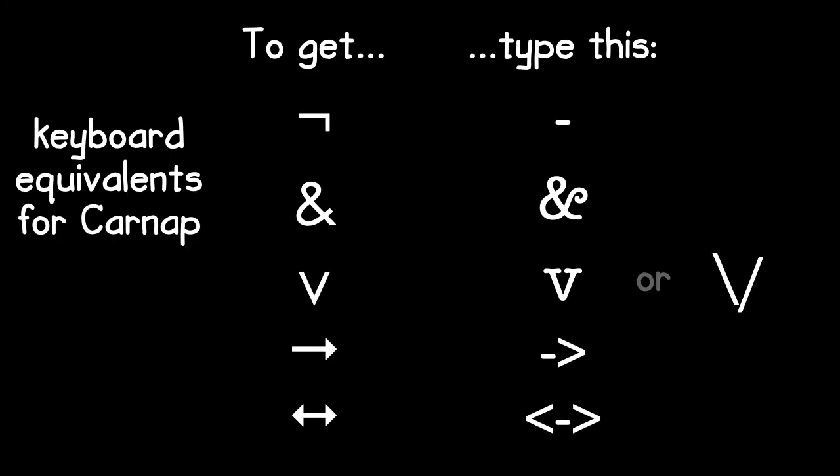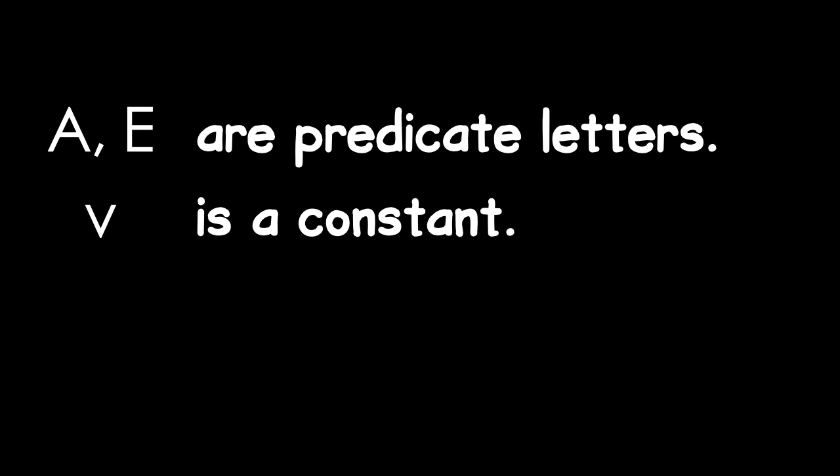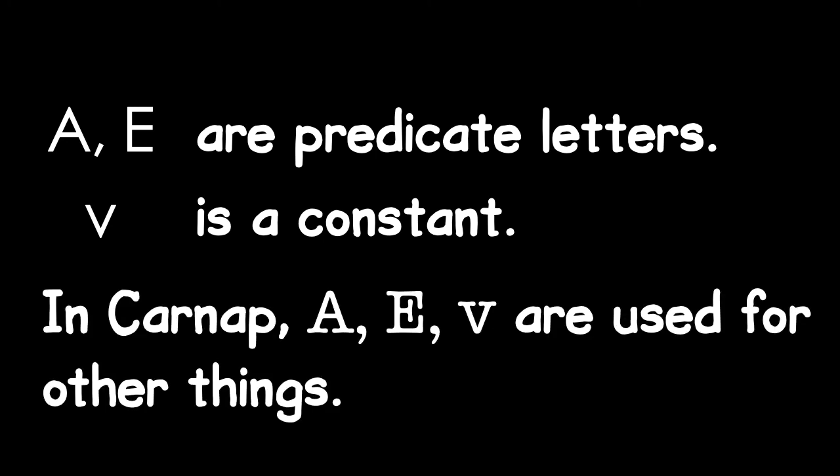When you're entering sentences of QL into Carnap, the keyboard equivalents for all of the sentential operators are exactly the same as they were in SL. Because there isn't an upside-down A or a backwards E on your keyboard, Carnap takes the regular capital A as the universal quantifier or a capital E as the existential quantifier. In QL, capital A and capital E are predicate letters. Lowercase v is a constant. In Carnap, however, we use those as keyboard equivalents. So capital A becomes the upside-down A, capital E becomes the backwards E, and lowercase v is used as the wedge for disjunction. This results in a small technical issue.